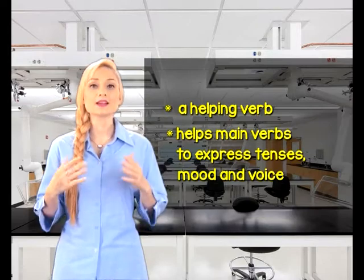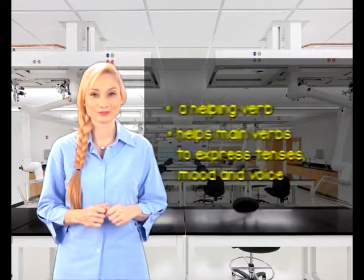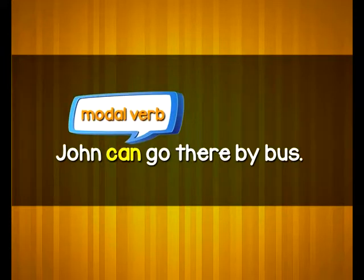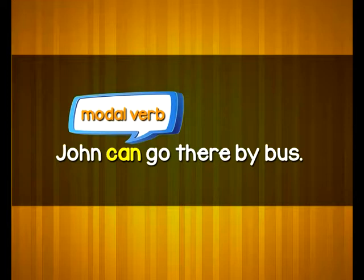Take a look at this diagram. In this sentence, we see that the modal verb 'can' comes before the main verb 'go'. Its function here is to show ability. In other words, 'can' has helped us to know that John is able to take a bus to his destination.